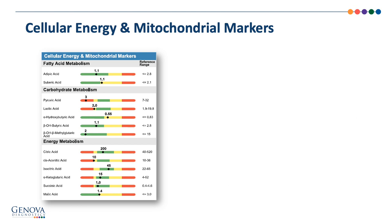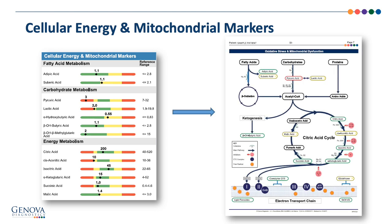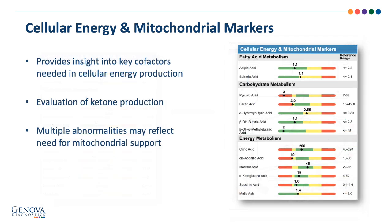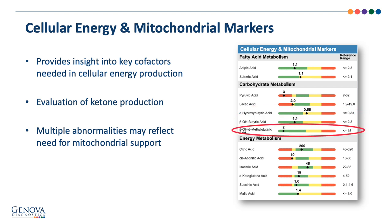The cellular energy and mitochondrial markers include the fatty acid metabolites, carbohydrate metabolites, and energy metabolites. They provide insight into key cofactors needed in cellular energy production and have the capacity to evaluate ketone production; multiple abnormalities may reflect a need for mitochondrial support. Alpha-hydroxybutyric acid has been demonstrated as a marker for overall poor lifestyle habits such as drinking, smoking, and sedentary lifestyle, and has also been associated with worsening insulin resistance and diabetes. Beta-hydroxybutyric acid is part of the HMG pathway responsible for producing both cholesterol and CoQ10; an elevation may indicate additional need for CoQ10 support.